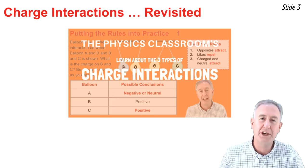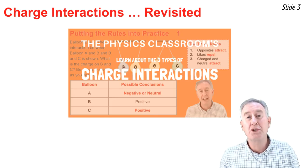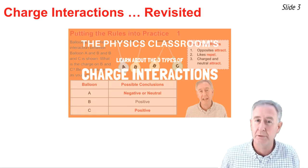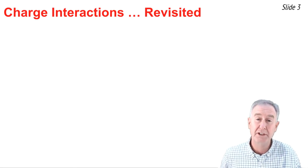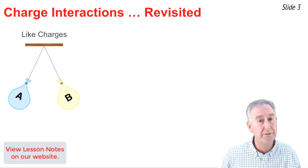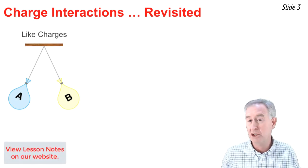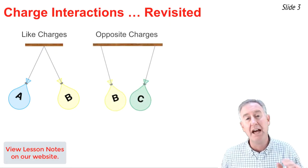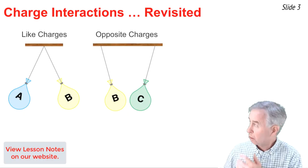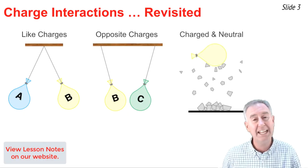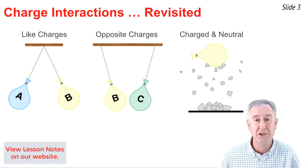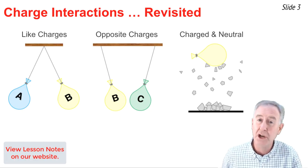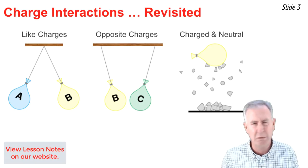In a previous video of this tutorial series, we discussed charge interactions. If you need a review, you'll find the link in the description section below. What we learned is that there are three types of charge interactions. The first is that objects with like charge — both positive or both negative — will repel one another. Objects with opposite types of charges will attract one another. And finally, any charged and neutral object will always attract one another. Of the three, the most surprising is this last one: that charged and neutral objects attract. What's up with that?